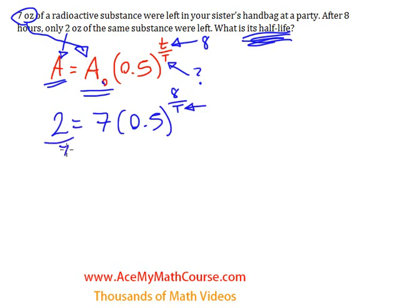So, I'm going to get started by dividing both sides of the equation by 7. So we have 2 over 7 equals half to the power of 8 over T.